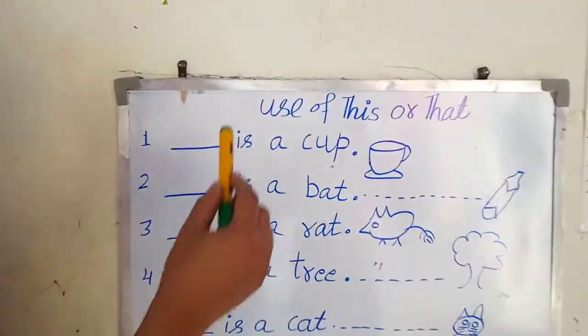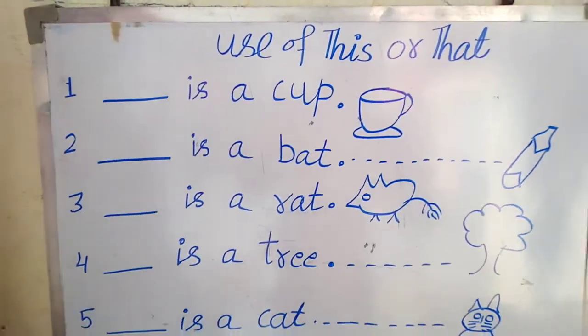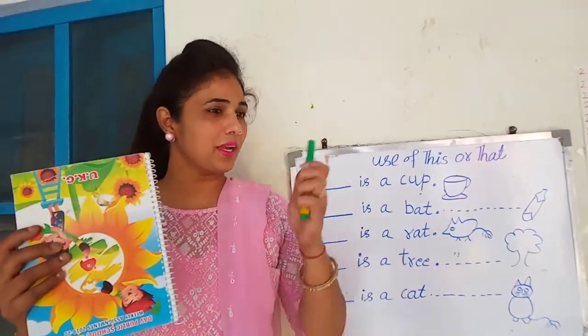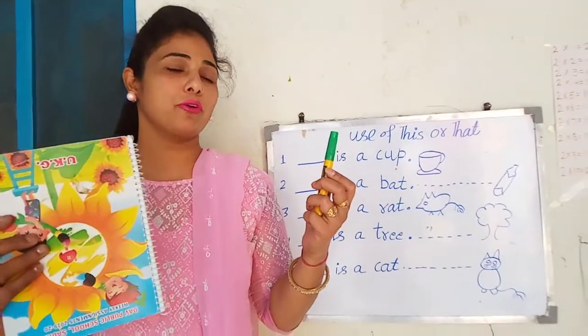Today our topic is use of this or that. You can see two things in my hand. This is a notebook and pen. We can use this or that. For what?